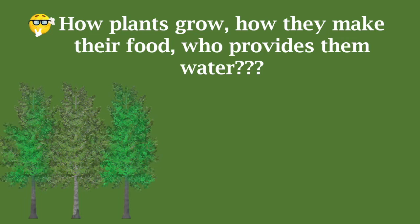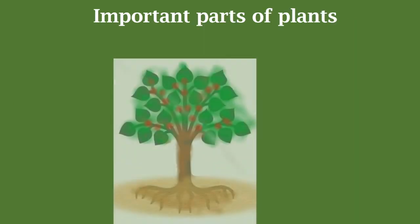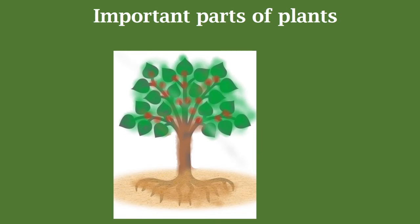Unlike animals or like us, plants don't depend on others for their food. In fact, plants are self-sustainable for their food. With the help of some naturally accessible factors, they can make their own food. The process through which plants prepare their food is called photosynthesis.